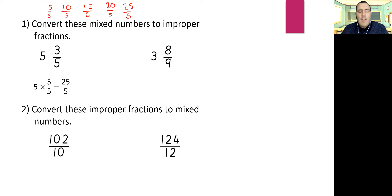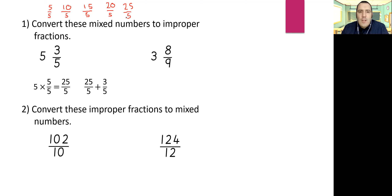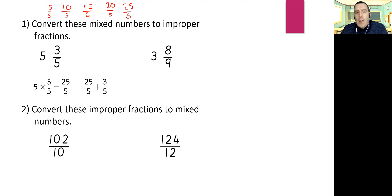So we've got the five wholes converted into an improper fraction, but we've still got the three fifths to deal with. We're going to add those on — we know how to add fractions, we practised it last week. Because the denominators are the same, all I have to do is add the numerators together, which gives me 28 fifths.